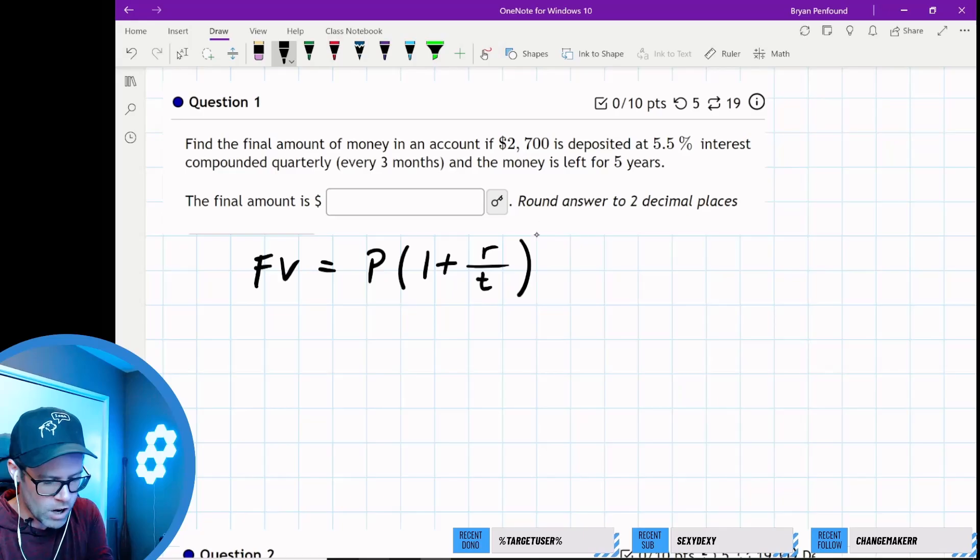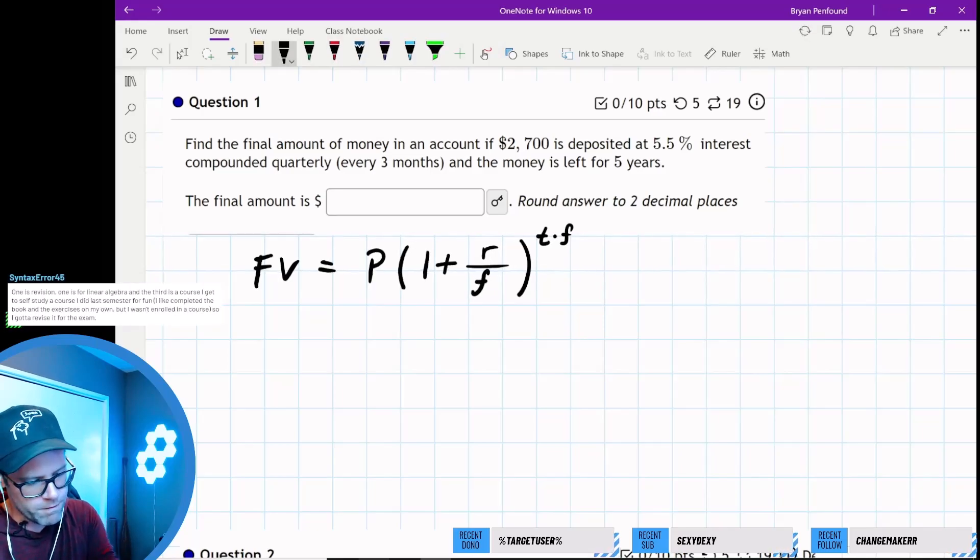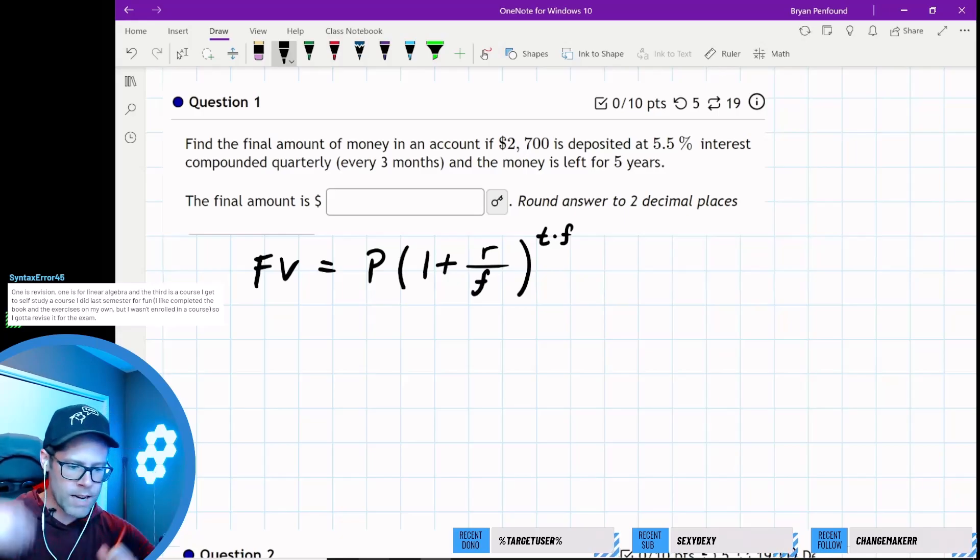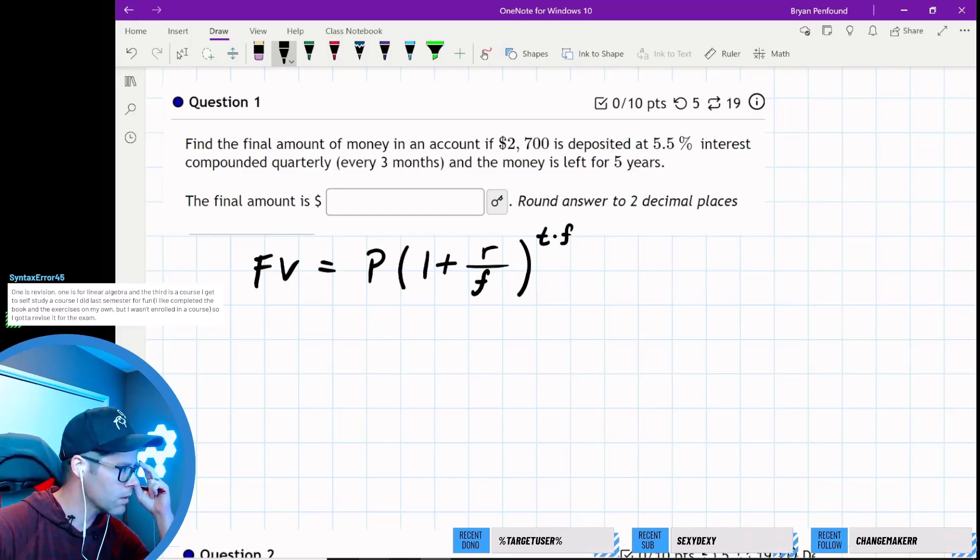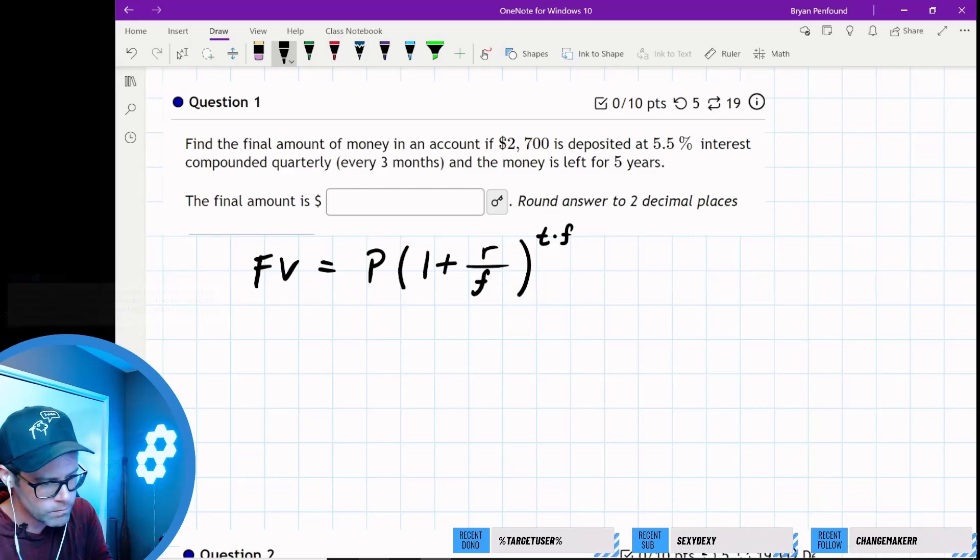The number of compounds should be t times f. This should be r over f, so we take the rate given to us, divide by the frequency—that's the periodic interest rate—and then the number of compounds is the time we have our money invested times the frequency number.